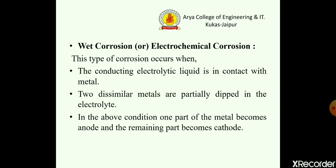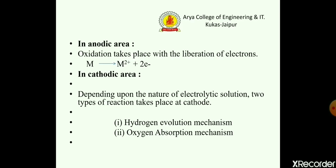Wet corrosion occurs when: the first condition is that a conducting electrolyte liquid is in contact with the metal, and the second condition is that two different metals are partially dipped in the electrolyte. In these conditions, one part of the metal becomes the anode and the remaining part becomes the cathode. In the anodic area, an oxidation reaction will take place, and oxidation means loss of electrons.